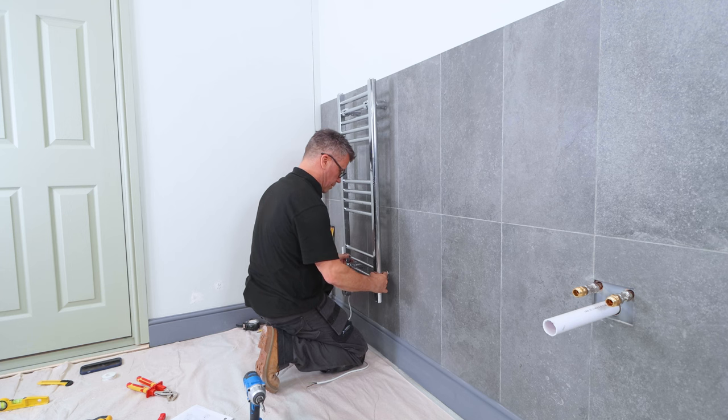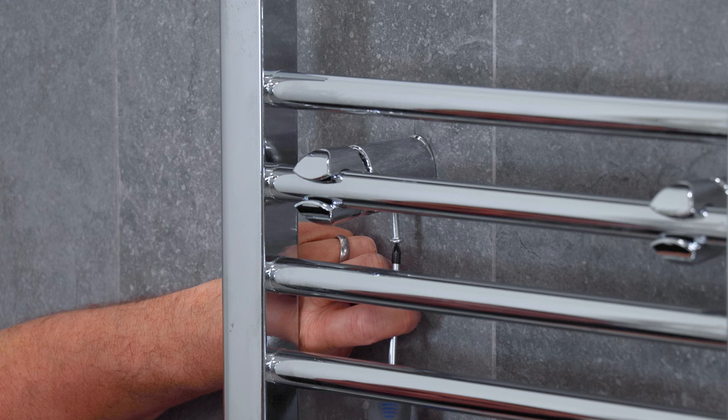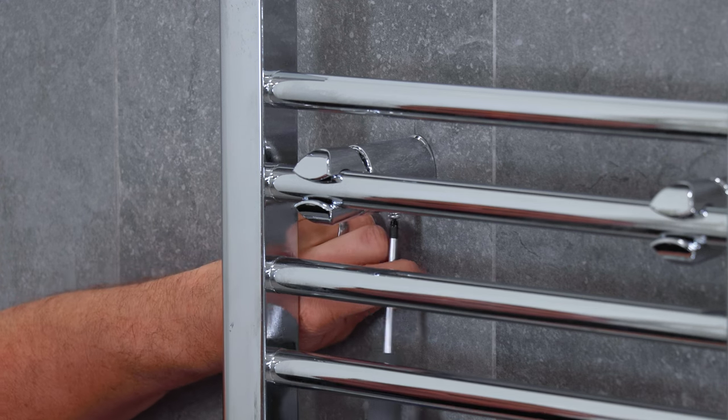Mount the radiator into position. Using a screwdriver, tighten up the screws on the back of the brackets. Once the radiator's hung, get your electrician to wire the thermostat up to the fuse.